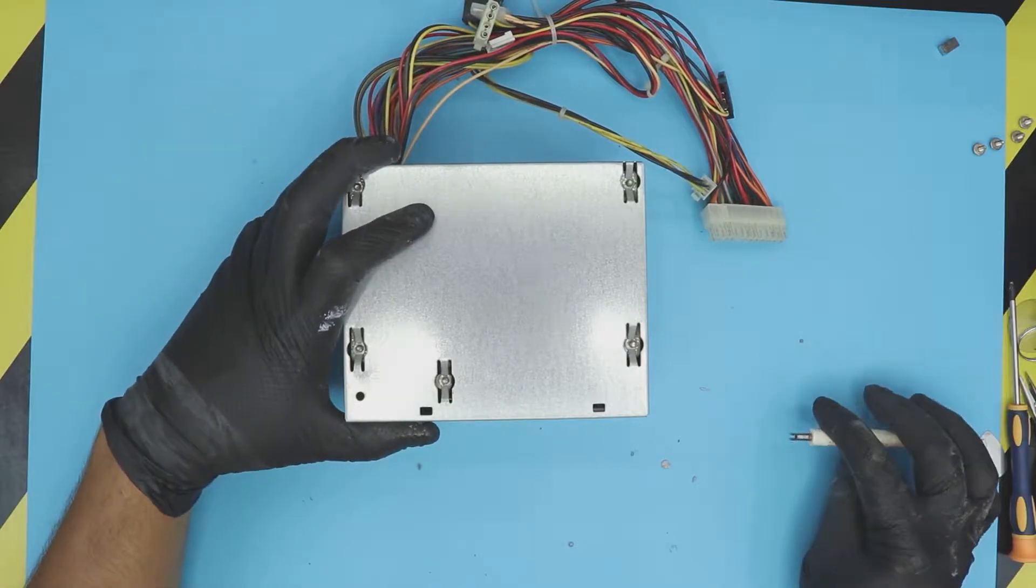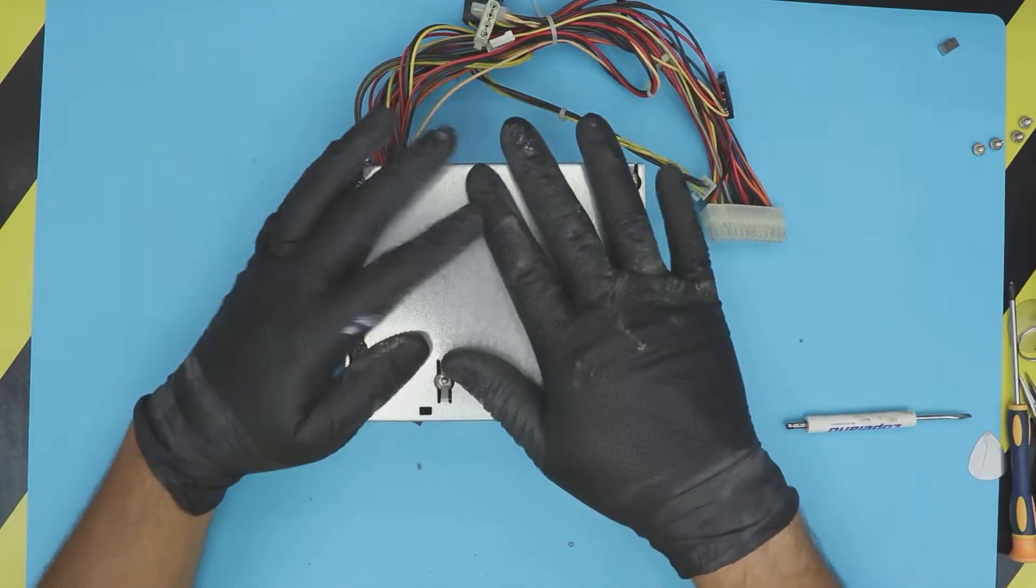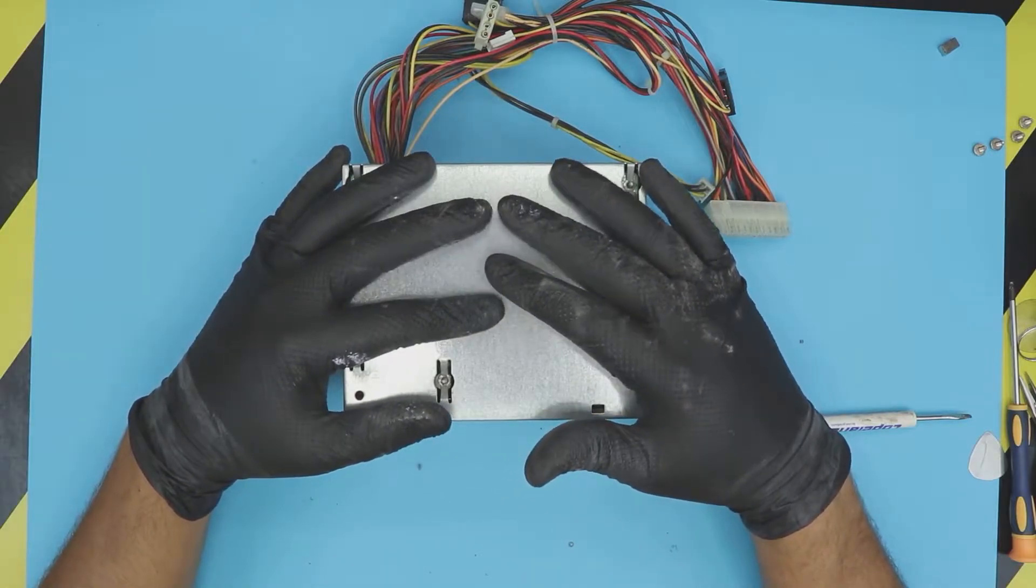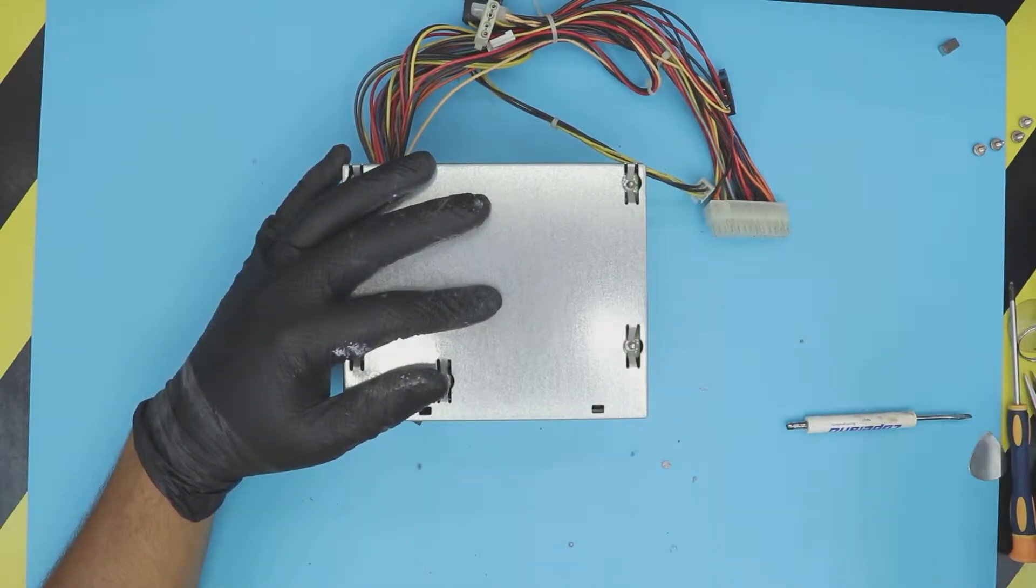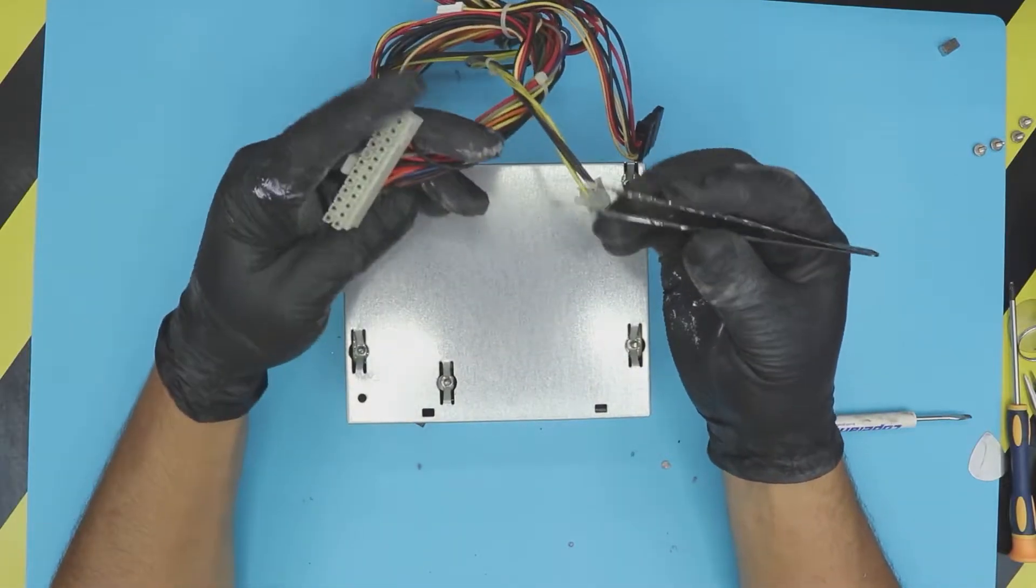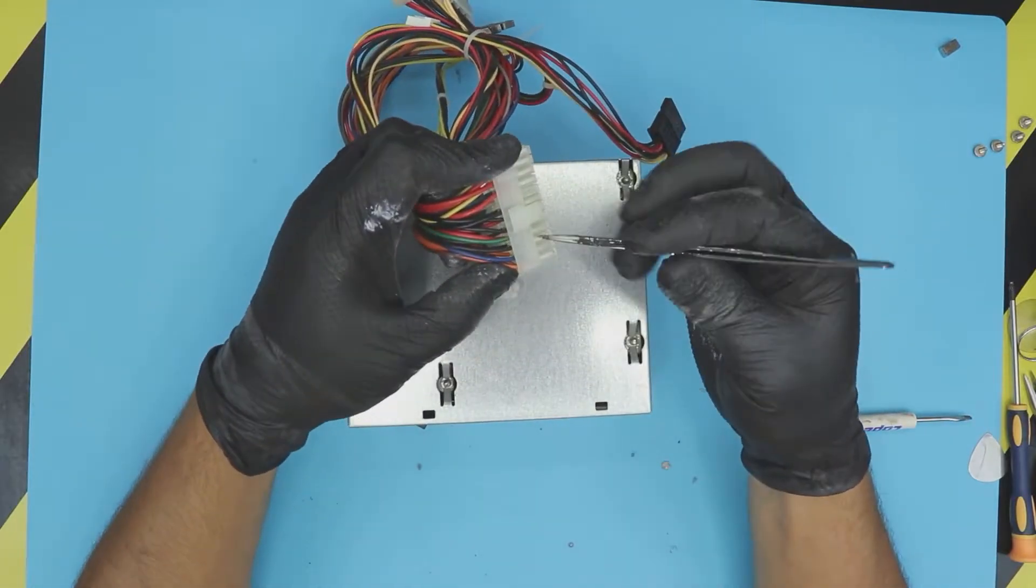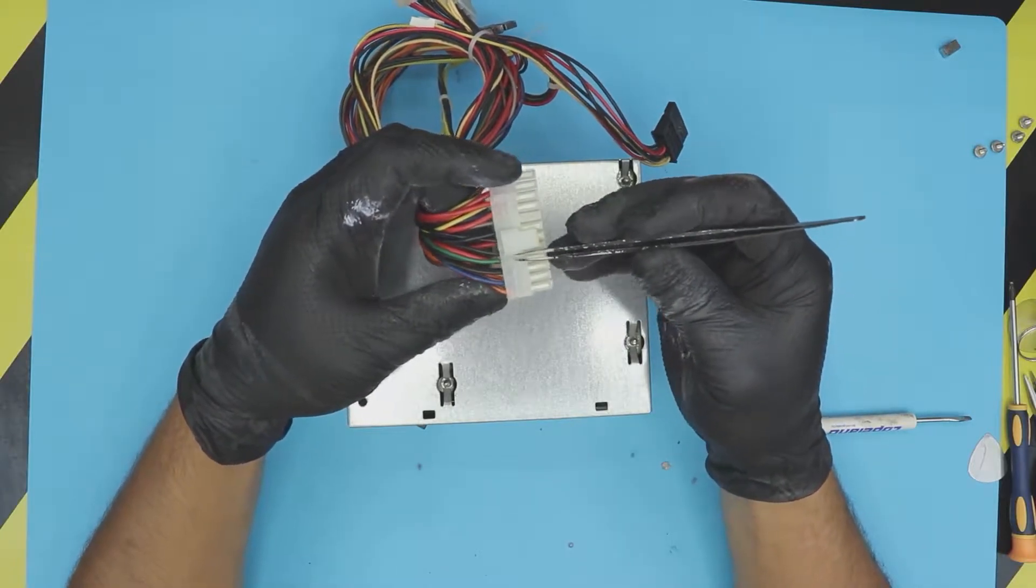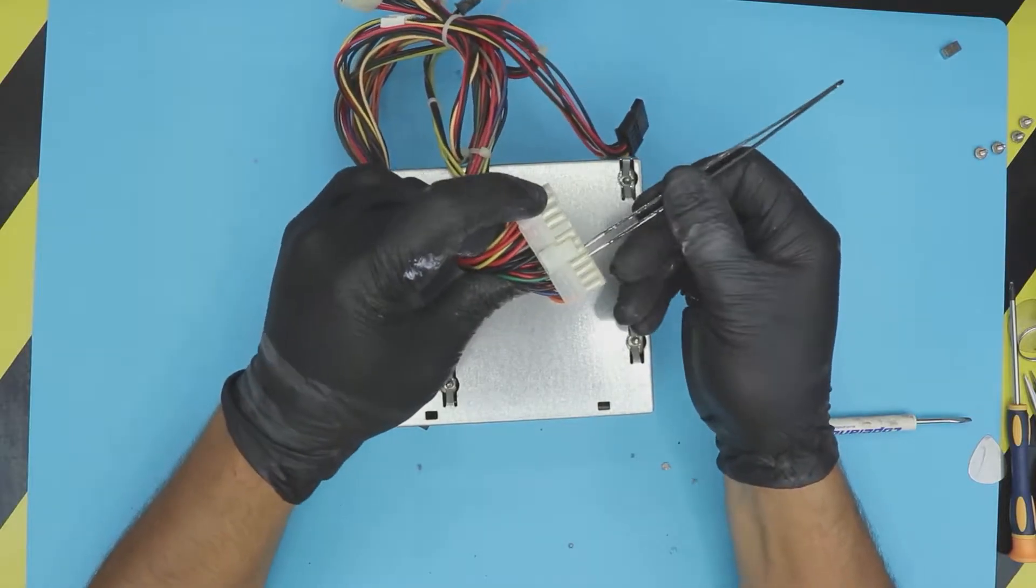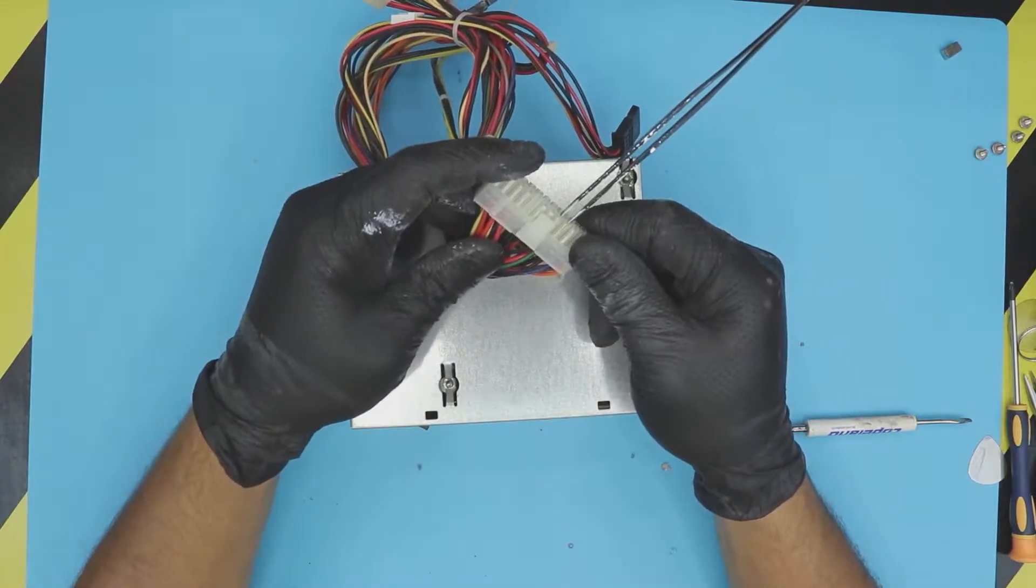Before we start doing this, I want to make sure that you have to drain all the power from the capacitors. The easier way to do it is to grab wires or tweezers like this and you want to short the green and the black cable right here. Follow the pins, put it there and leave it there for about a minute.